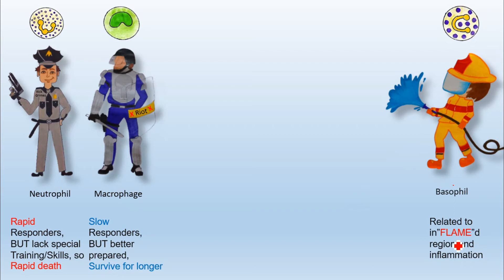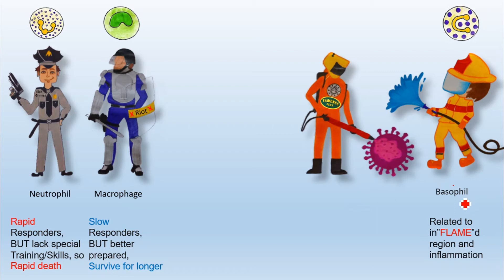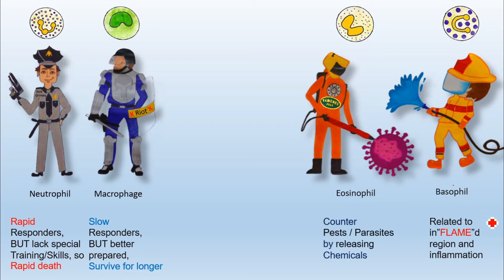This person is a fumigator, and I'm comparing the fumigator with eosinophils. Just like a fumigator releases chemicals to remove or erase pests and parasites from a house, eosinophils also release certain chemicals to counter pathogens. An easy way to remember: 'E' for eosinophils, 'E' for erase — eosinophils are there to erase parasites like helminths by releasing specific chemicals.